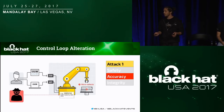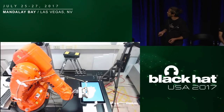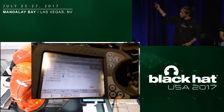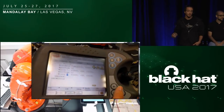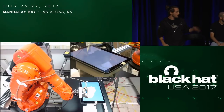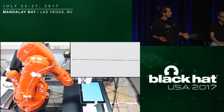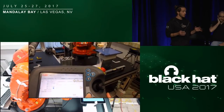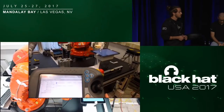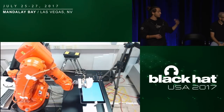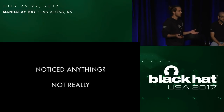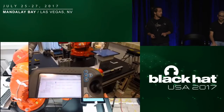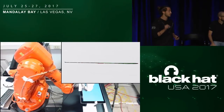We developed a proof of concept to show what happens — we weren't able to bring the robot with us, but let me show you the video. We programmed the robot to just draw a straight line, nothing fancy. At this moment, the robot is not under attack. Now the robot is under attack — nothing changed, the code is always the same. Looking closely at the pencil trail, we find that a small drift of a couple of millimeters has been introduced.